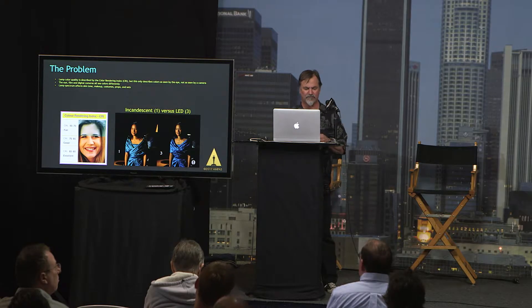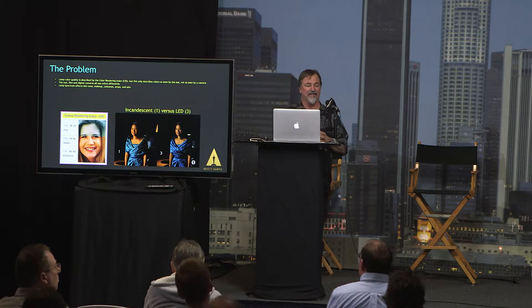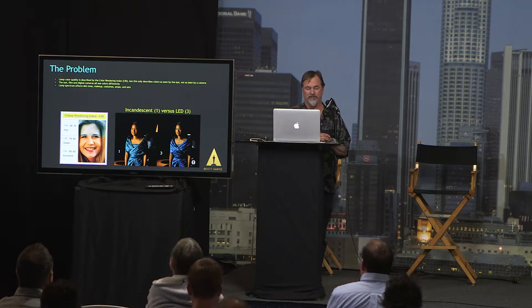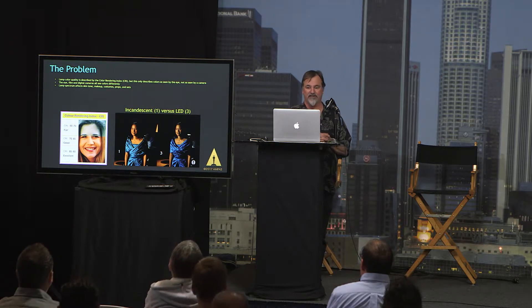The eye and film and digital cameras all see color differently. And lamp spectrum affects skin tone, makeup, costumes, props, sets, and as you will learn in a second or so, color charts very profoundly.